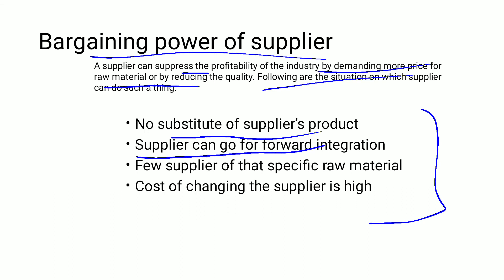Supplier bargaining power increases if the supplier can go for forward integration — meaning the supplier can become a competitor by setting up manufacturing. If a supplier threatens forward integration, you give them more leverage and power. Additionally, if there are few suppliers of a specific raw material, there is low supply and prices increase. If raw material costs increase, industry profitability will decrease.